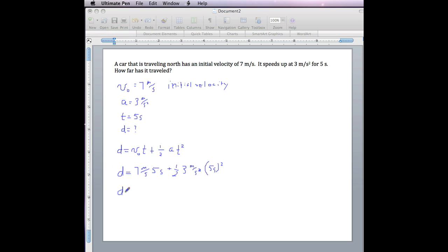Now I can follow the order of operations by multiplying before I add. When you multiply the 7 times the 5 you get 35. We notice that the seconds cancel leaving us with meters. And in the second term we multiply 1 half times 3 times 5 squared, which is 37.5.